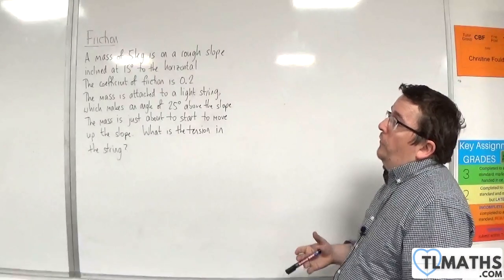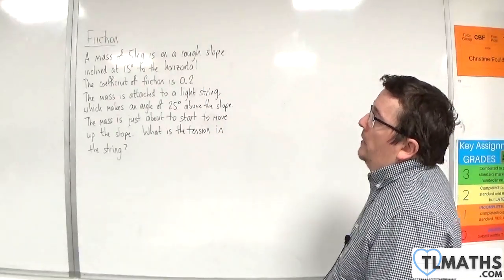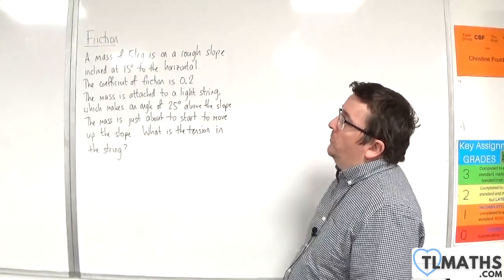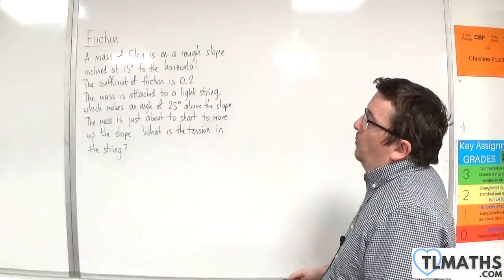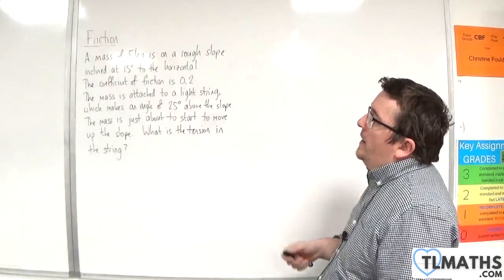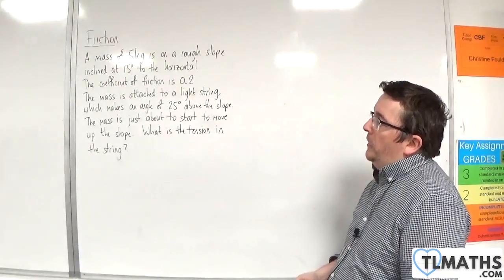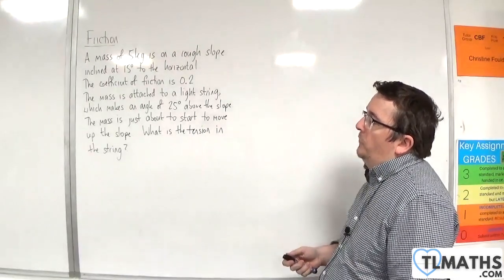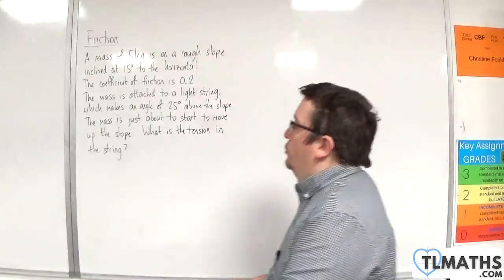In this video, a mass of 5 kilos is on a rough slope inclined at 15 degrees to the horizontal. The coefficient of friction is 0.2. The mass is attached to a light string which makes an angle of 25 degrees above the slope. The mass is just about to start to move up the slope. What is the tension in the string?